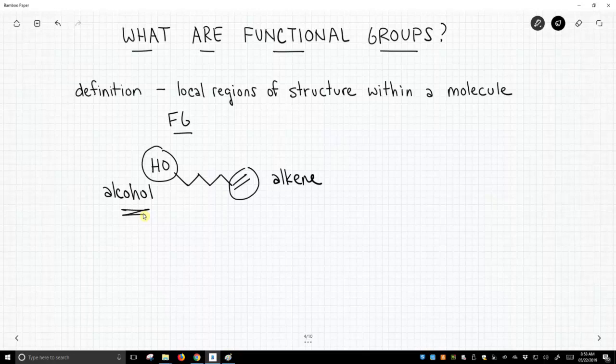Functional groups are also good for referring to other parts of the molecule. So this molecule has six carbons – one, two, three, four, five, six.